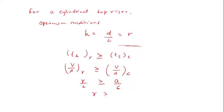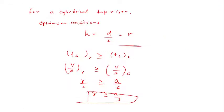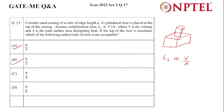So in the option we can see that option a and option b both satisfy this equation, which is r should be greater than or equal to a by 3. So your answer a and b both are correct. Option a and b both are answers for